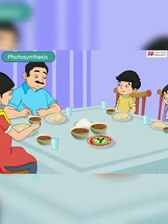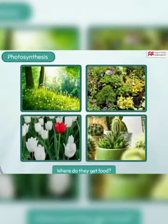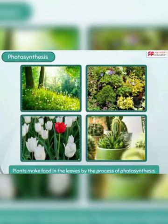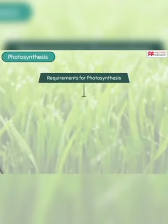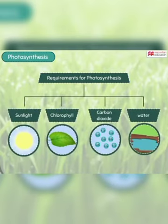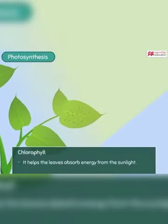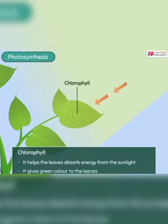We depend on plants for most of our food requirements. But what about plants — from where do they get food? Plants make their own food in the leaves by the process of photosynthesis. The important things needed by a plant to perform photosynthesis are sunlight, chlorophyll, carbon dioxide, and water. All plants use energy from sunlight to make food. The part of the leaves that catches and absorbs the sun's energy is called chlorophyll. Remember, it is chlorophyll that gives leaves their green colour.